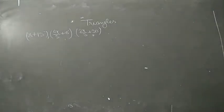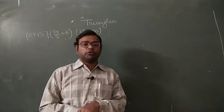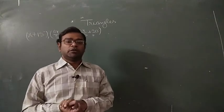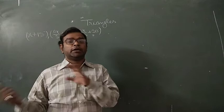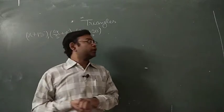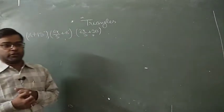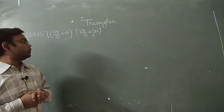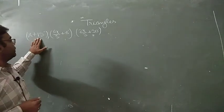Today we are going to discuss some questions based on the rules and properties learned in the last video. Let's start — the first question asks us to find the value of angles given in variable form.